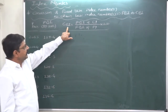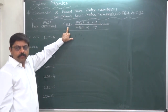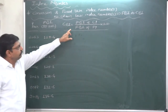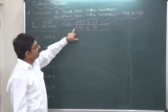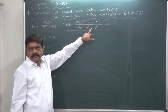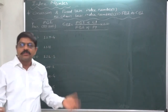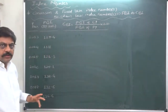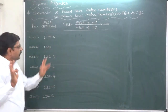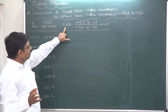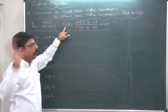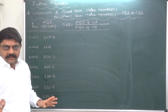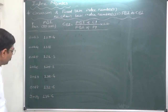Since we want a chain-based index number, the base is always the previous period. The calculation of chain-based index number — whether from the original data or from fixed-base index numbers — is exactly the same.